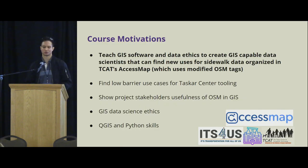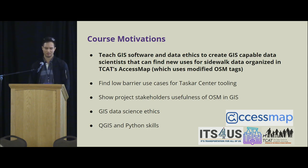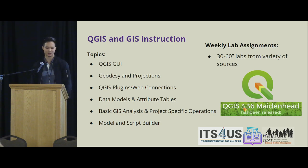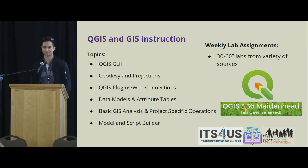The motivations for this course were to teach students GIS basics and to introduce responsible data science concepts. The course taught some technical skills: QGIS, Python, Geodesy, and Spatial Analysis. Students also learned how to use some of the Tasker Center's tooling, like our Walksheds Calculator.